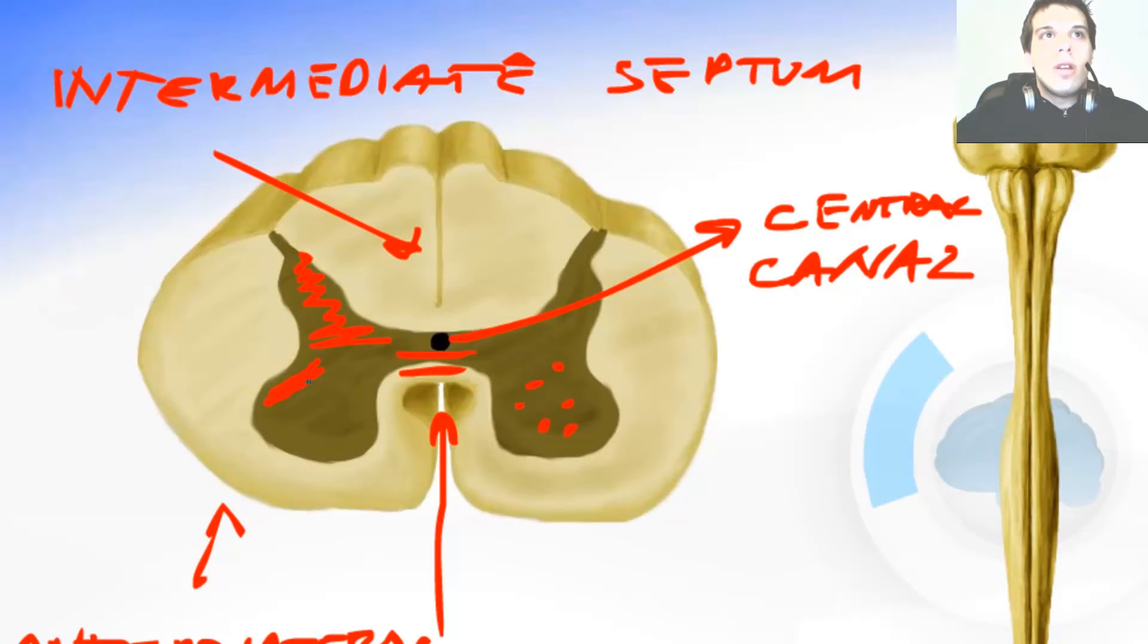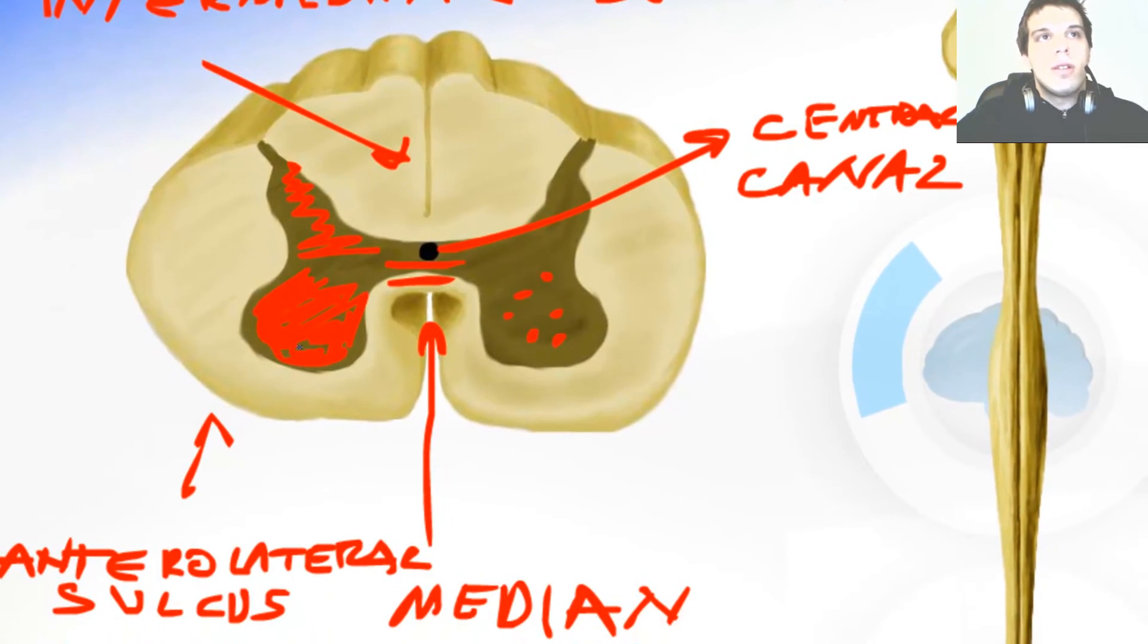This part over here is the motor horn or the anterior horn of the spinal cord gray matter. Motor neurons send their axons through the anterolateral sulcus here and they join with the sensible root of the spinal nerve and they create the spinal nerve.